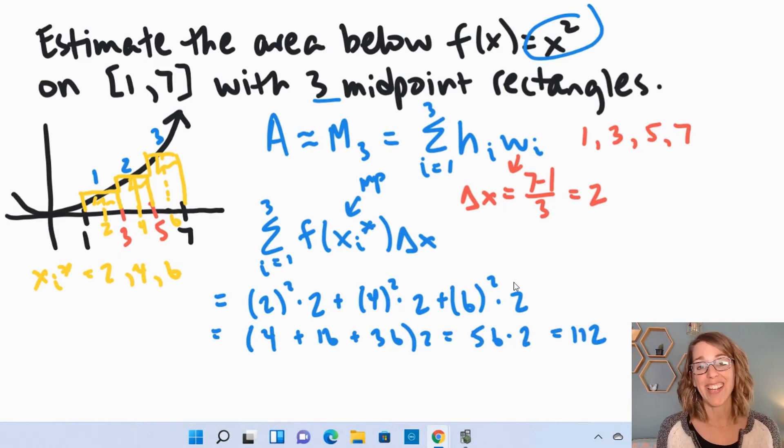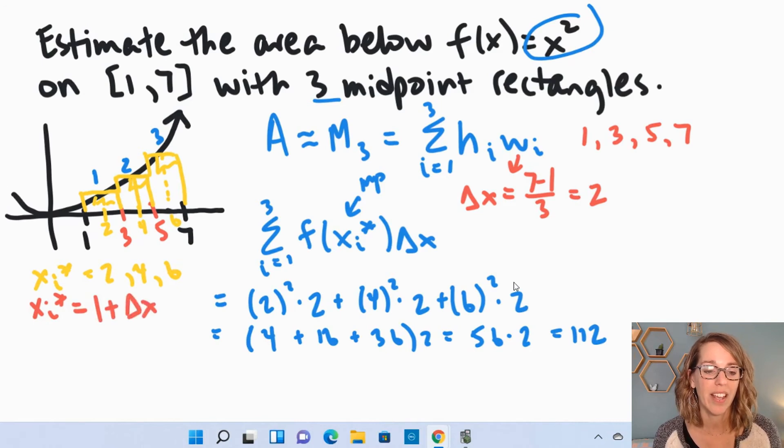Now you might instead need to put this into the summation. Let's go ahead and redo those xi stars, our sample points, which are the midpoints, and I'm going to do those using delta x's. So in order to get to 2, I'm going to start at 1.